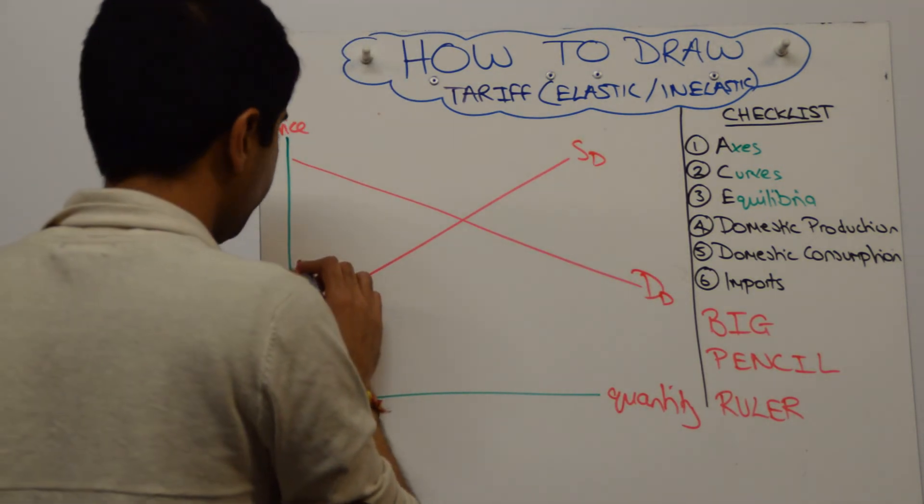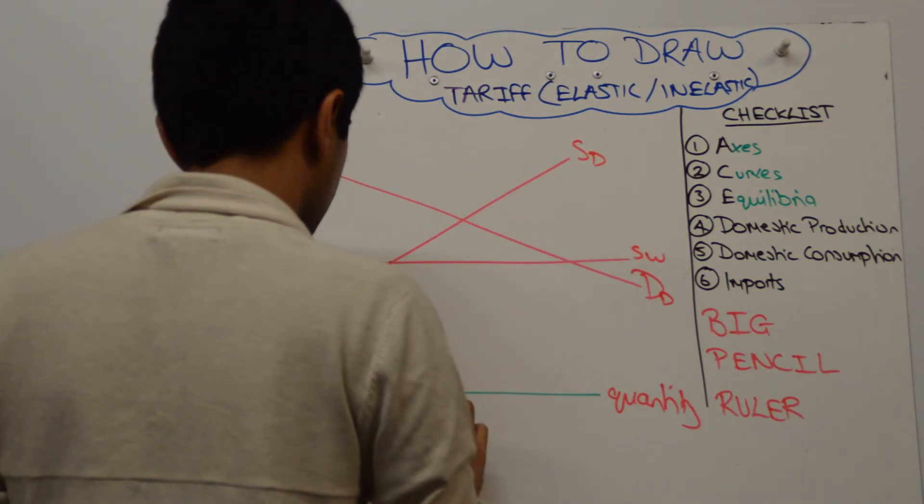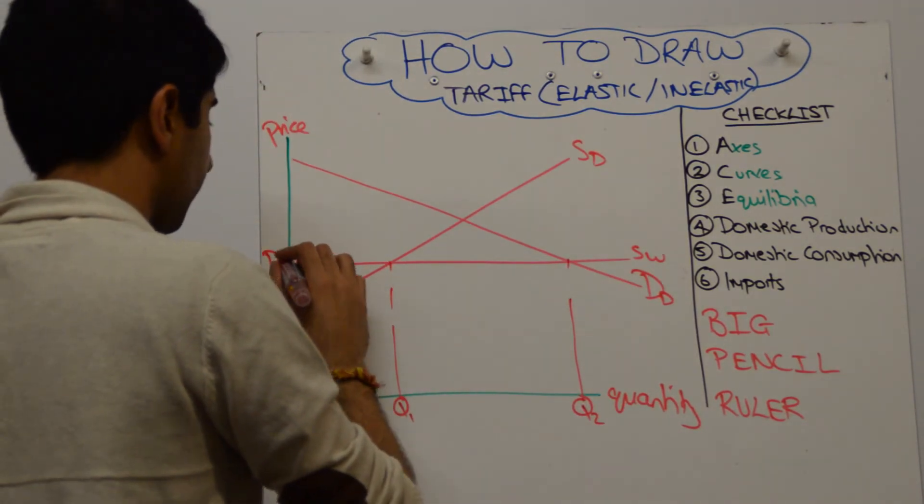Our supply reward curve there. And then what we're going to show here is domestic production at Q1, domestic consumption at Q2 with a price of Pw.